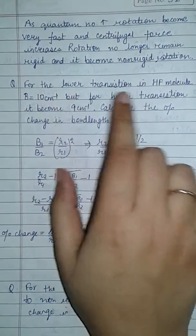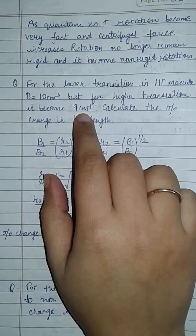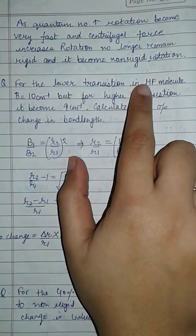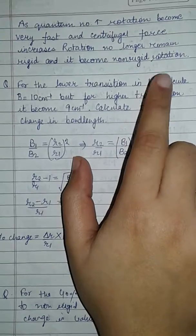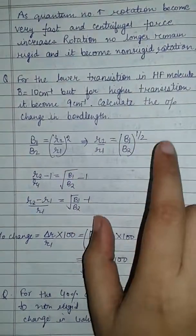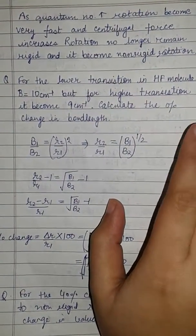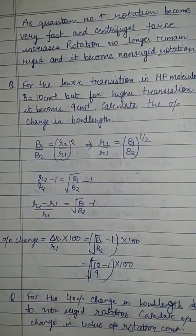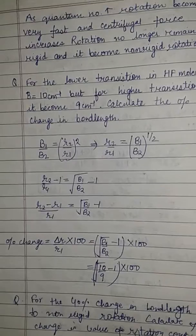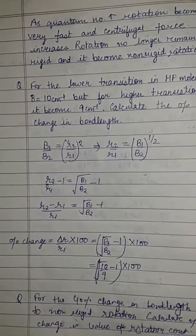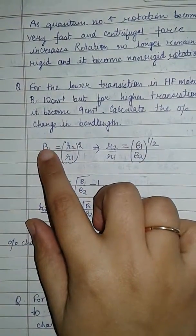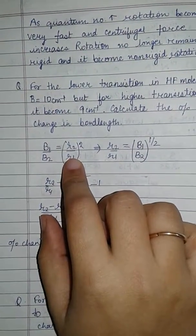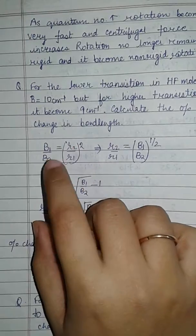Now there is a question: for the lower transition in HF molecule, B is 10 cm⁻¹, but for the higher transition it is 9 cm⁻¹. Calculate the percentage change in bond length. Since the molecule is HF, μ remains constant and R will change. B is inversely proportional to the square of bond length, so B₁/B₂ = R₂²/R₁².